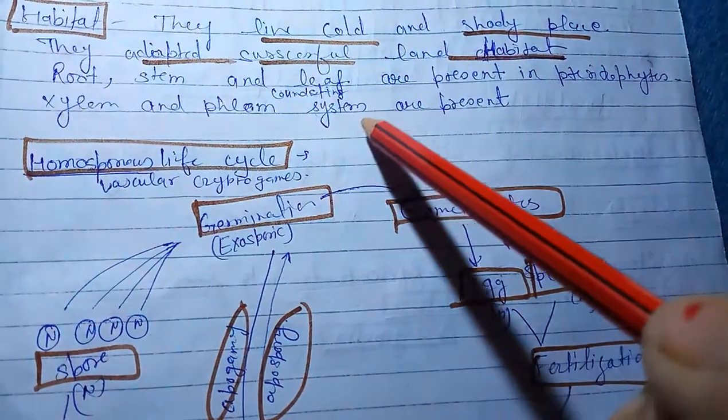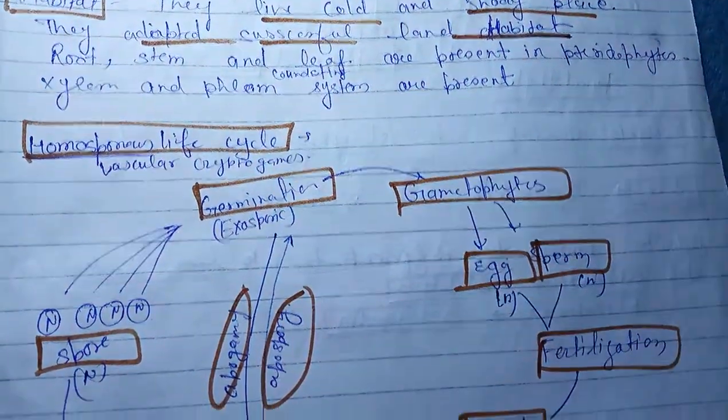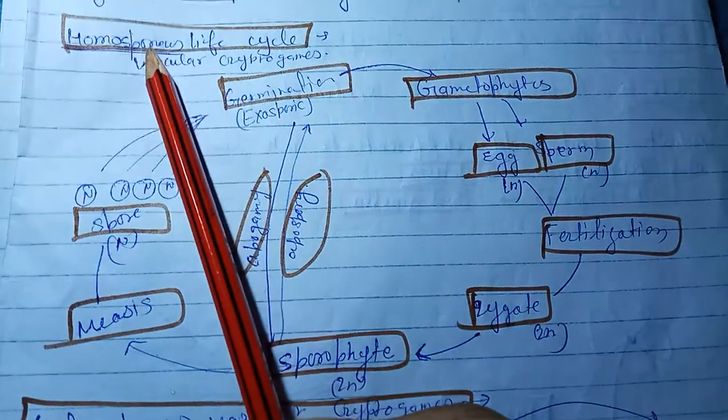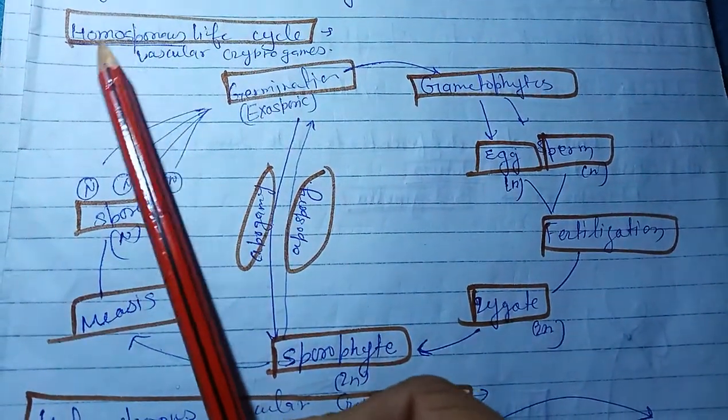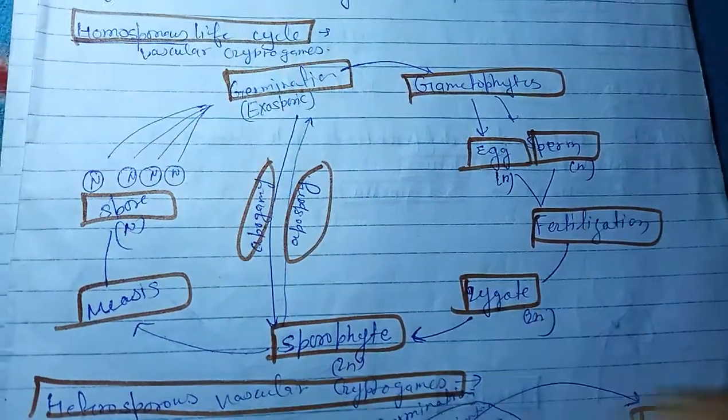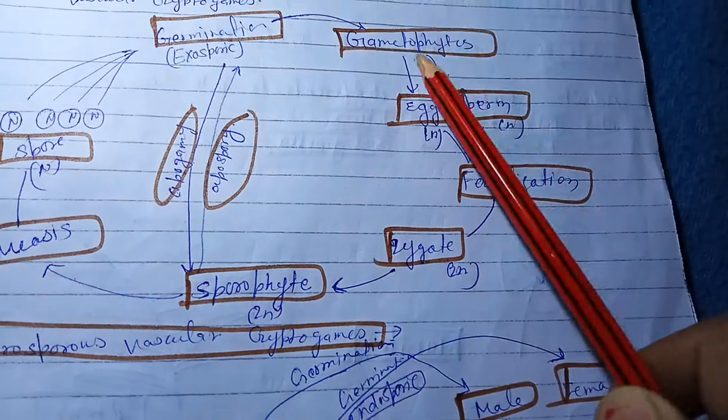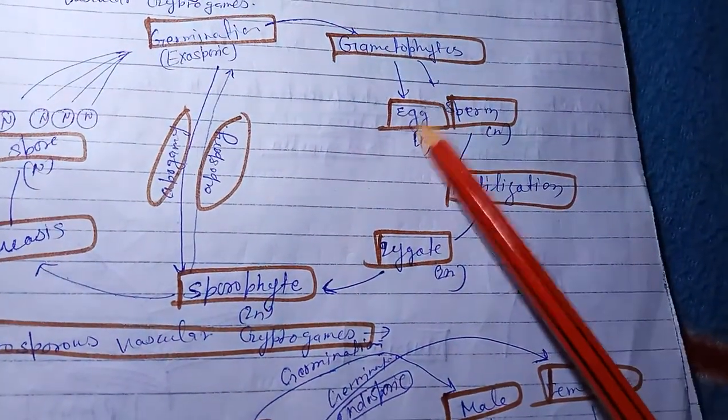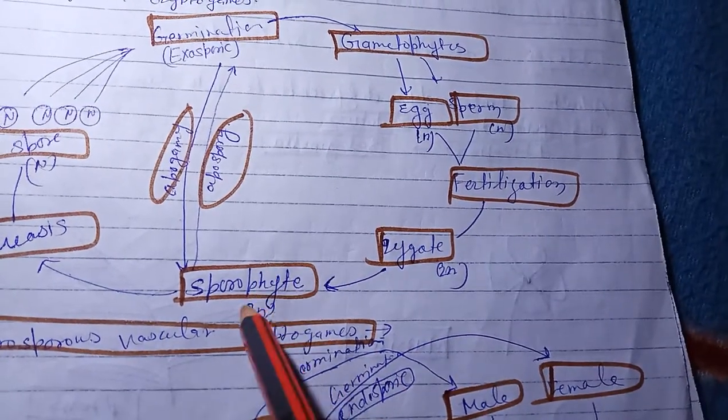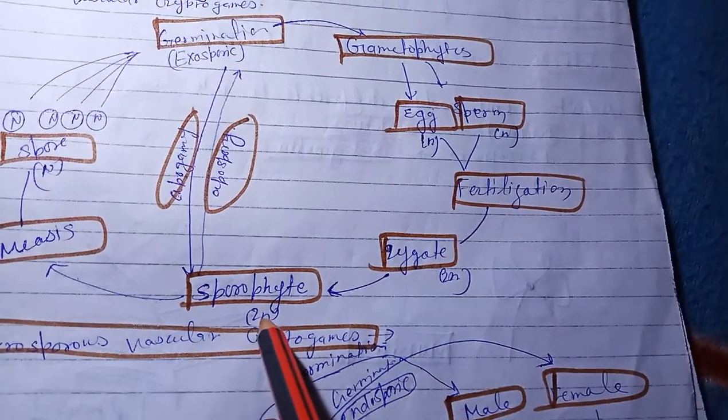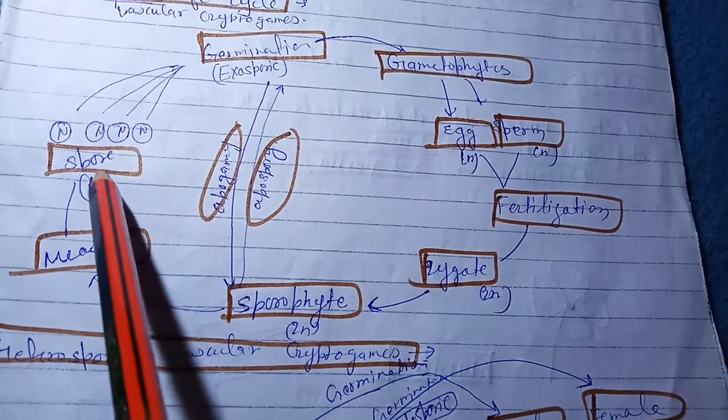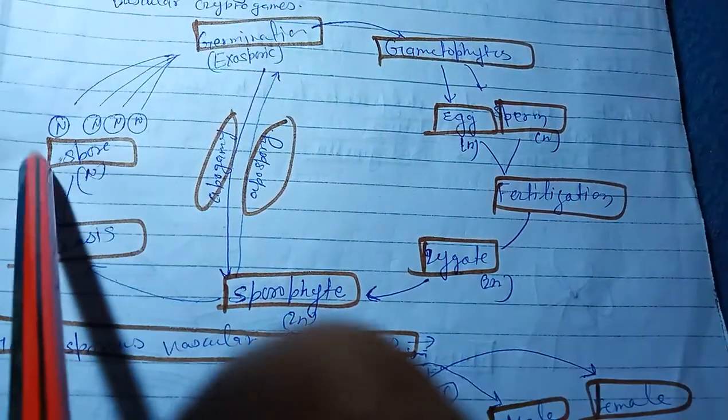Conducting systems are present - xylem and phloem are present. Homosporous life cycle - homosporous means similar spores are present on leaf outer surface. Gametes germinate, then sperm fertilization and zygote. After zygote they turn into sporophyte.